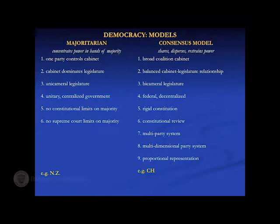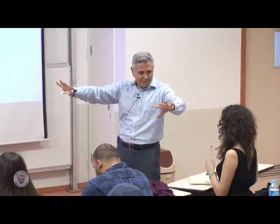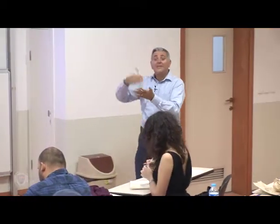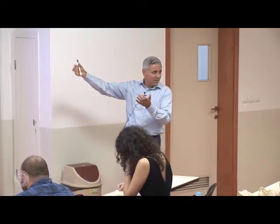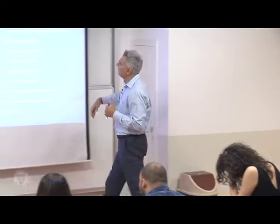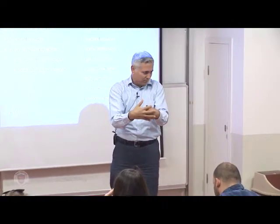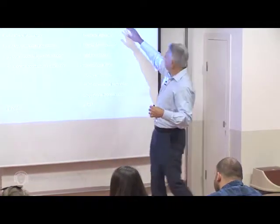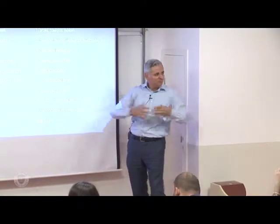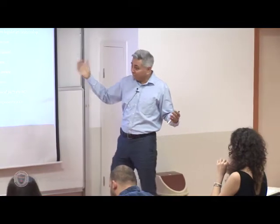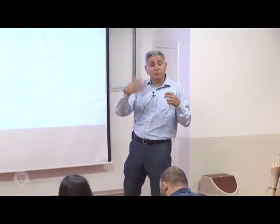The other model — the consensus model — is quite the opposite of the majoritarian system. Whereas the majoritarian model concentrates power in the hands of the majority, the consensual model disperses, shares, and divides power in the hands of many. Think of the majoritarian model as a centripetal system concentrating power, and the consensus model as a centrifugal system which disperses power outwards to different elements that make up governance.